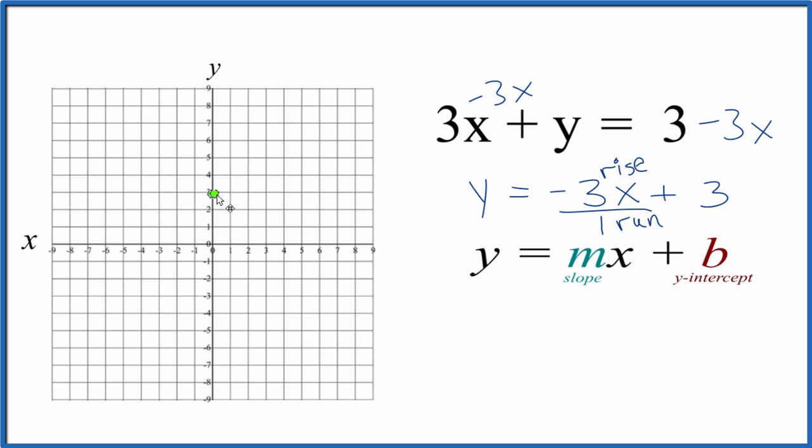So we go to our y-intercept. We're going to rise negative 3. If it was just 3, we'd go 1, 2, 3 up, but it's negative. So we go in the opposite direction. We go 1, 2, 3 down, and then we run 1 to the right.